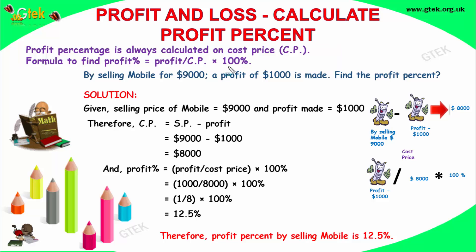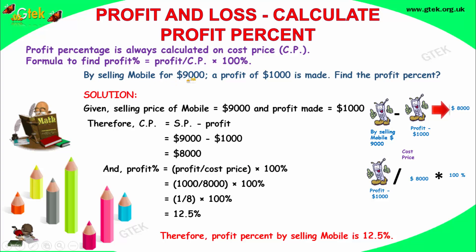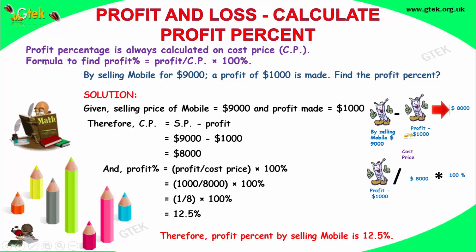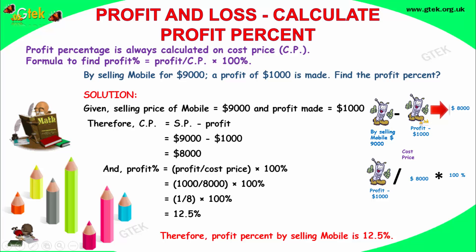Let's move on to the problem. By selling a mobile for $9000, a profit of $1000 is made. Find the profit percentage. The mobile is sold for $9000 and we made a profit of $1000, so the actual cost price will be...